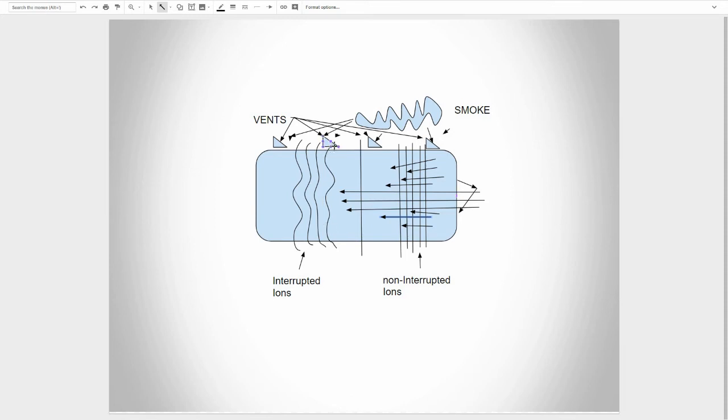And yeah so this is our first model and then this is our second model, so it looks like all one but this is what it would look like if smoke entered into the vents and interrupted the ions, and then this is our non-interrupted ions model.